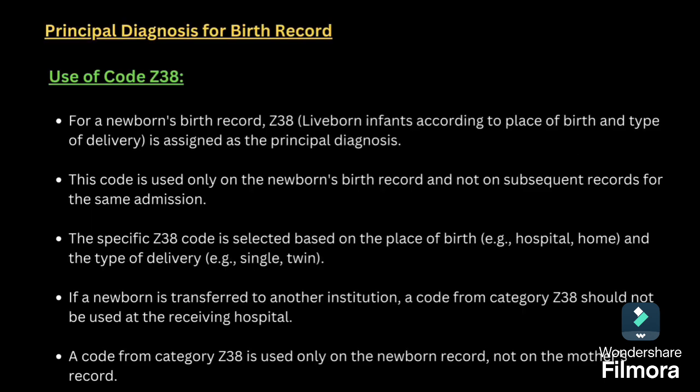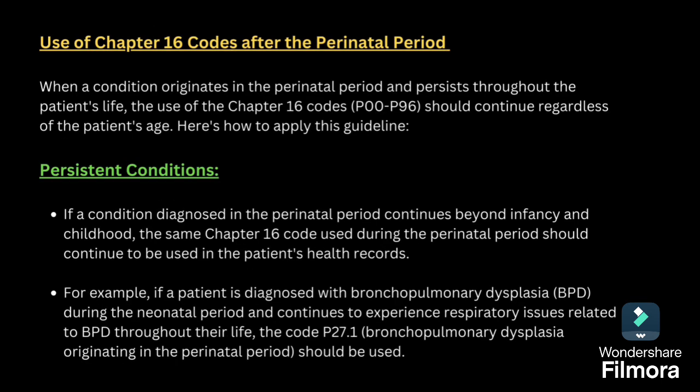Next is the principal diagnosis for the birth record. Whenever we are coding for P series, we should code Z38 as the primary diagnosis based on the place of birth and type of delivery. If the baby is taken to the same hospital where it is born, then Z38 should be the primary code and the second code will be the P series. Suppose the baby is taken to another hospital — then directly the P series will be the primary code.